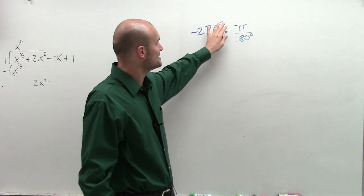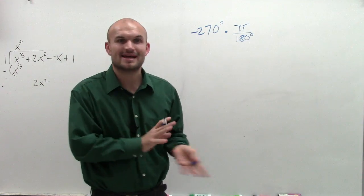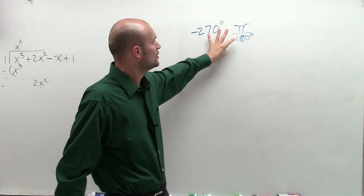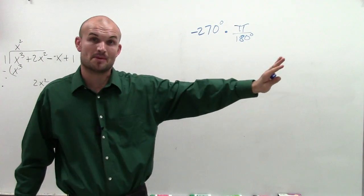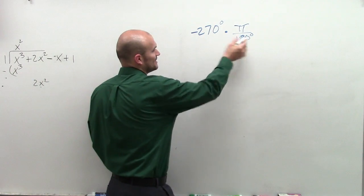remember, what's happening is when I take my degree and divide by degree, my degrees are going to cancel out, leaving me just with my ratio times π, which is going to leave me an answer that's in radians. So by getting this, I'm actually going to have a negative value.